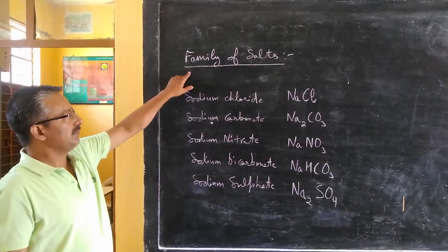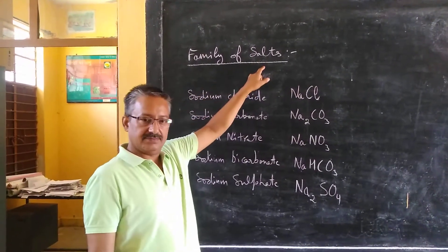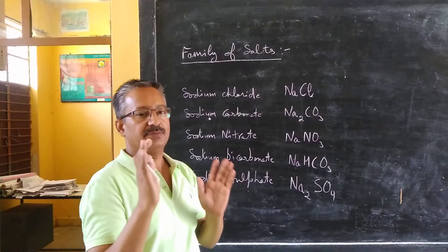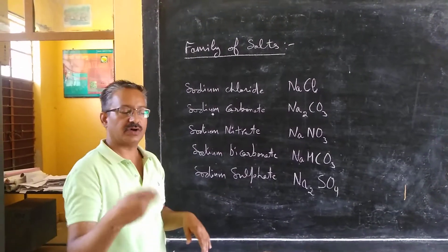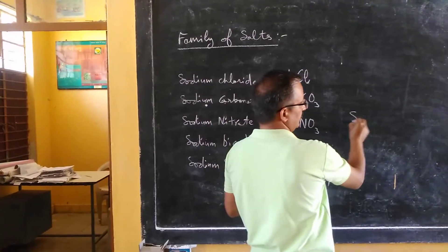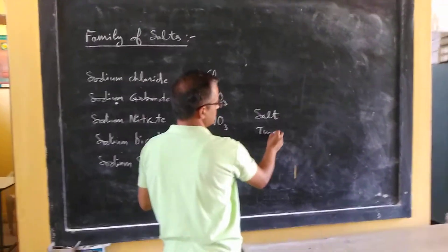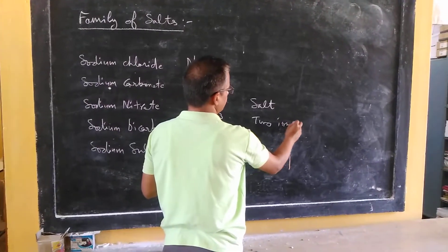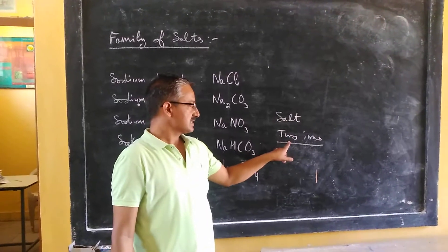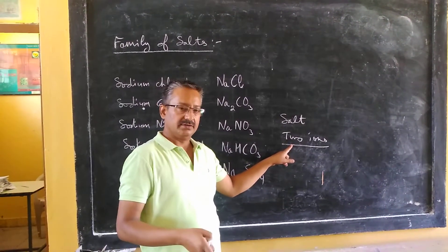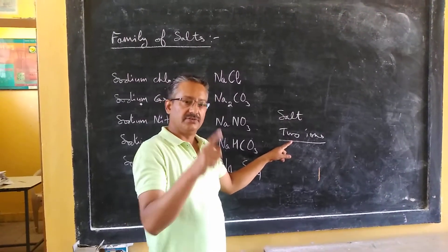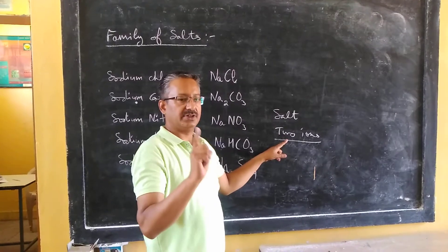The first topic is family of salts. Whenever there is any salt, to which family a particular salt belongs — how can we check that? A salt is a combination of two ions. Inside, there are two types of ions. Now, those ions which will have one ion in common, those two salts will be said to belong to that particular ion's family.